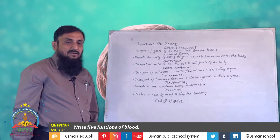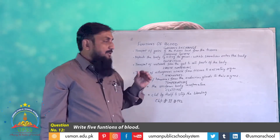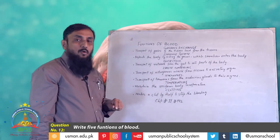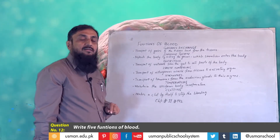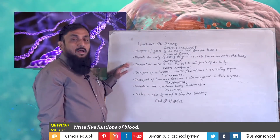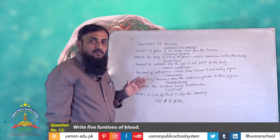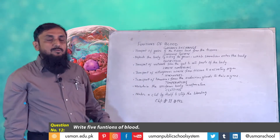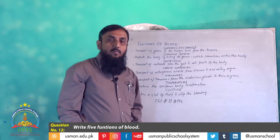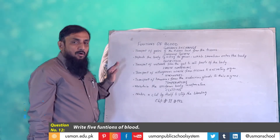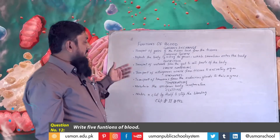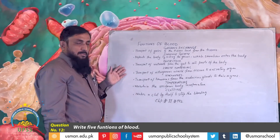Blood is not limited to the immune system. It also works as a transport system, driven by the heart. The food we eat is absorbed through the walls of the small intestine and transported through the blood to all parts of the body. So blood also plays a vital role in nutrition, transporting nutrients to all parts of the body and cells where energy is needed.